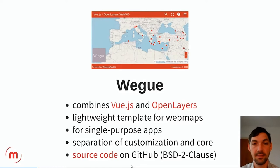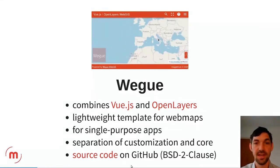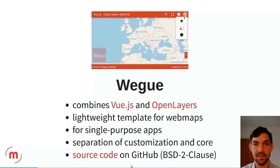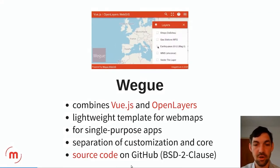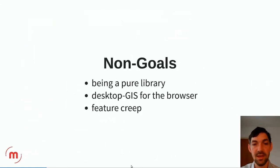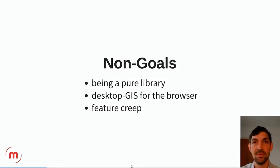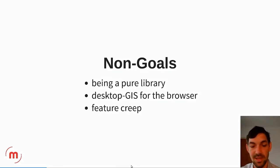There is a separation of custom code, which you can customize and tailor to your needs, and the core code. Non-goals include: we don't want to become a pure library, we don't want to become a desktop GIS for the browser, and we want to avoid feature creep — overloading the UI with too many features — so we would like to keep it user-friendly, simple and easy to use.